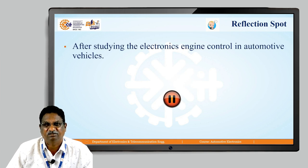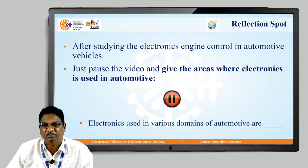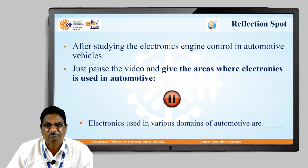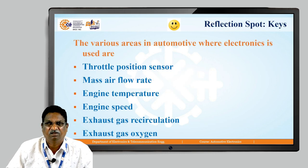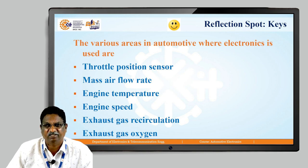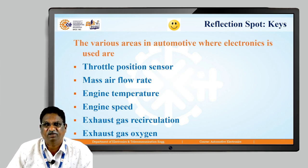At this reflection spot, after studying the electronics engine control in automotive vehicles, pause the video and list the areas where electronics is used in automotive — that is, which domains use electronics for controlling parameters. The answer includes: throttle position sensor, mass air flow rate, engine temperature, engine speed, exhaust gas recirculation, exhaust gas oxygen, and so on. These are the main sensors used, though there are other areas where sensors can also be applied.